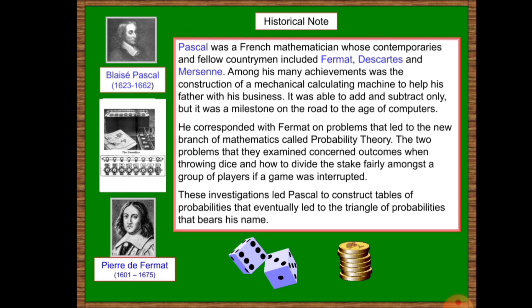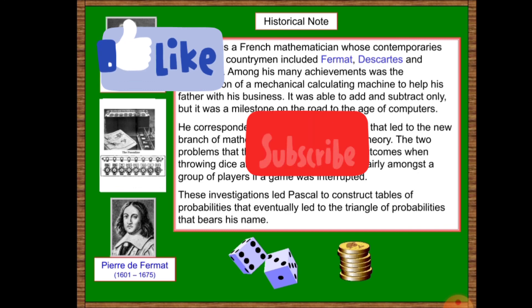He also worked with Fermat on mathematical problems and developed many theories. Among these is probability theory. He used dice to calculate chances and began to justify probabilities. While constructing a table to justify this, he created what became known as Blaise Pascal's Triangle — now called Pascal's Triangle. His name has become very important in the mathematical world.